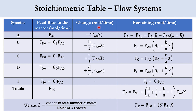For the change column, which is in moles per time, the change for the limiting reactant A is minus FA0·x. For reactant B it is minus b/a times FA0·x. For product C it is plus c/a times FA0·x. For product D it is plus d/a times FA0·x. Reactants take a negative sign and products take a positive sign, each multiplied by their stoichiometric coefficient. For inert there is no change.